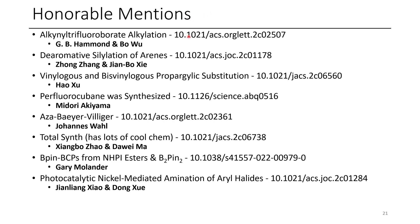The honorable mentions for this month are as follows: alkynal trifluoroborate alkylation in Org. Lett.; dearomative silylation of arenes from JOC; vinylogous and bisvinylogous propargylic substitution from JACS. We also have the synthesis of perfluorocubane this month — this almost made it as one of the five papers, but because I focus on synthetic utility in this series, I thought it would be appropriate to include it here, although I love a good cubane. We also had an example of Aza Baeyer-Villiger oxidation in Org. Lett., another really cool total synthesis in JACS, a good paper from Gary Molander's group forming B-pin BCPs from NHPI esters and B2pin2, and a paper on amination of aryl halides under photocatalytic conditions with nickel, which seems like a general approach that complements Buchwald-Hartwig amination.